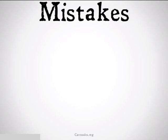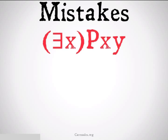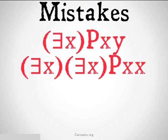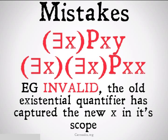Third common mistake: from 'there exists some X such that X bears relation P to Y,' concluding 'there exists some X such that X bears relation P to itself' — existential generalization, invalid. The old existential quantifier has captured the new X in its scope. Using the parent example: you can't be the parent of yourself, but you could be the parent of someone else. Just because we're allowed to existentially generalize doesn't mean we're allowed to capture variables already in scope.